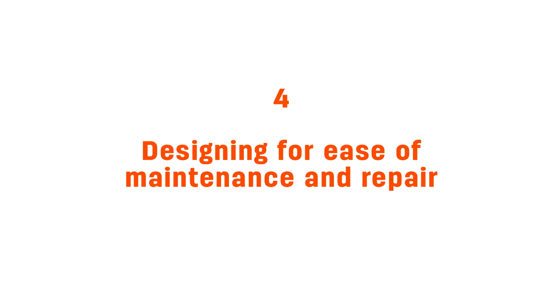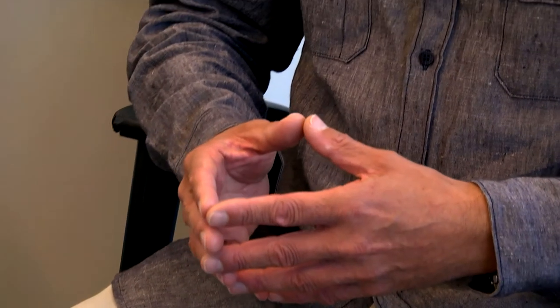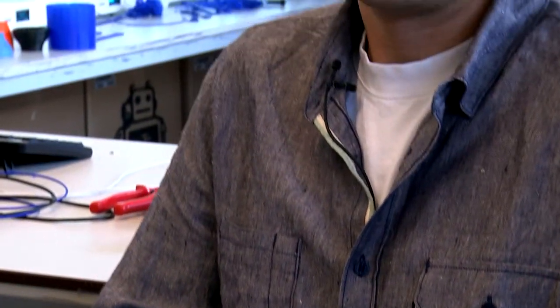The fourth one is designing for ease of maintenance and repair. Almost trivially, one way of ensuring that a product lasts a long time is taking care of it and making sure it's always in working condition — in tip-top condition. One way of facilitating that people actually maintain their product is designing it in such a way that it's easy to maintain. And if it should break down, it's also important that you design it so that you can easily repair it, instead of throwing it away because you can't get access to the broken part inside.